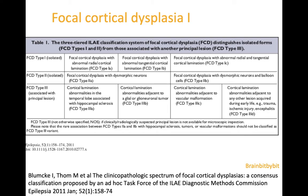Initially, there were only two types of focal cortical dysplasia. In type 1, there was abnormal architecture, and in type 2, there was abnormal architecture and abnormal cells. In 2011, clinical and radiological findings were taken into account as well, and a third type of focal cortical dysplasia was added, with hippocampal sclerosis, a tumor or vascular malformation, or because of acquired abnormalities.